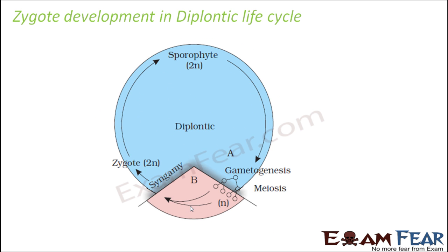Now let us look at how the zygote develops in a diplontic life cycle, where most of the time the organism is in the diploid phase — only for some time it is in the haploid phase. Gametogenesis happens, gametes are formed, syngamy occurs, and the zygote is formed. In this case, the zygote does not undergo meiosis. The zygote directly forms the sporophyte, which is diploid. This sporophyte then undergoes meiosis to produce the gametes directly.